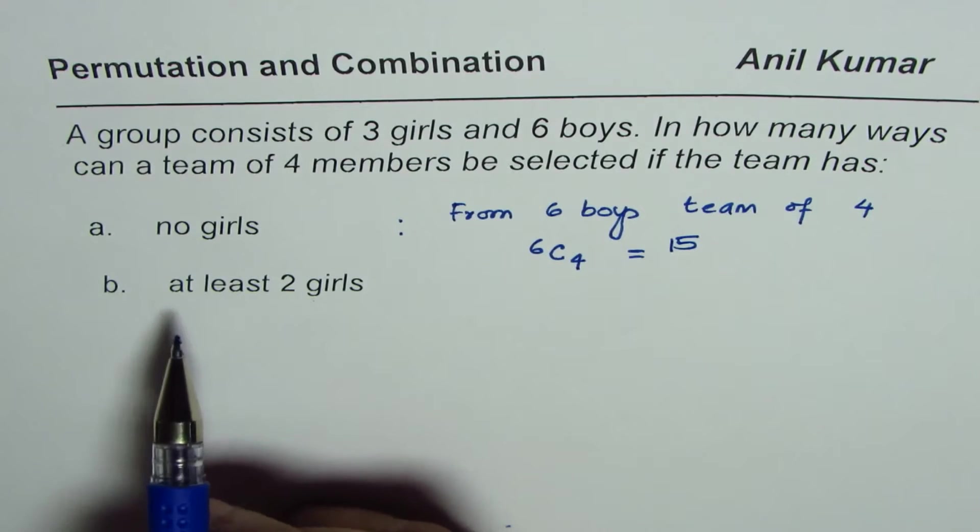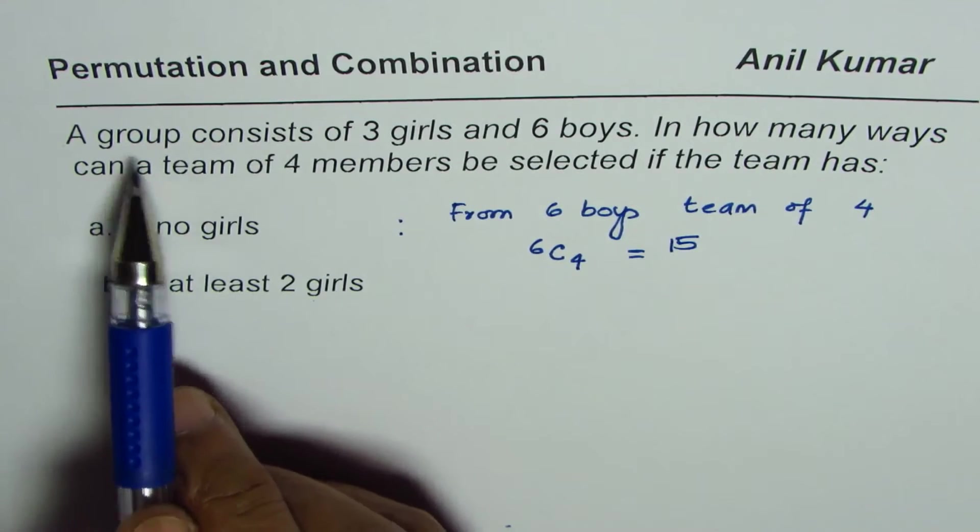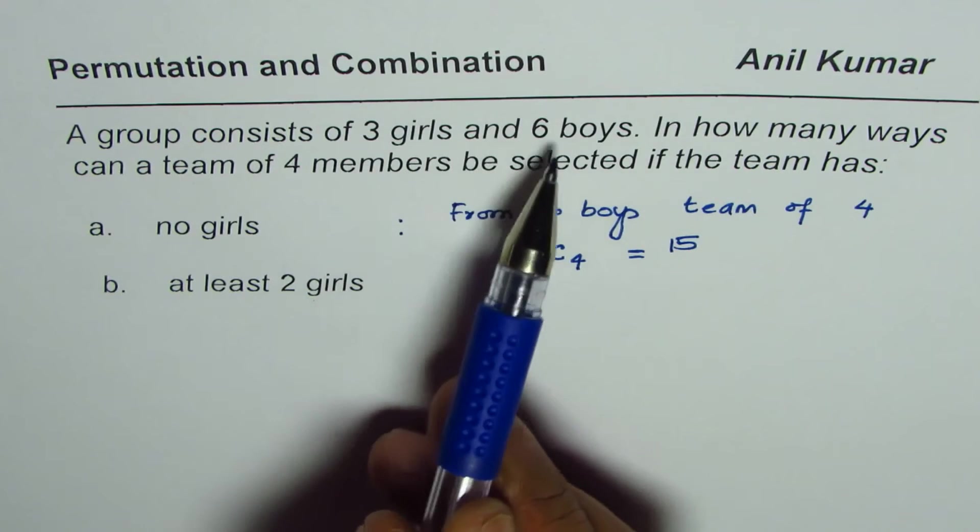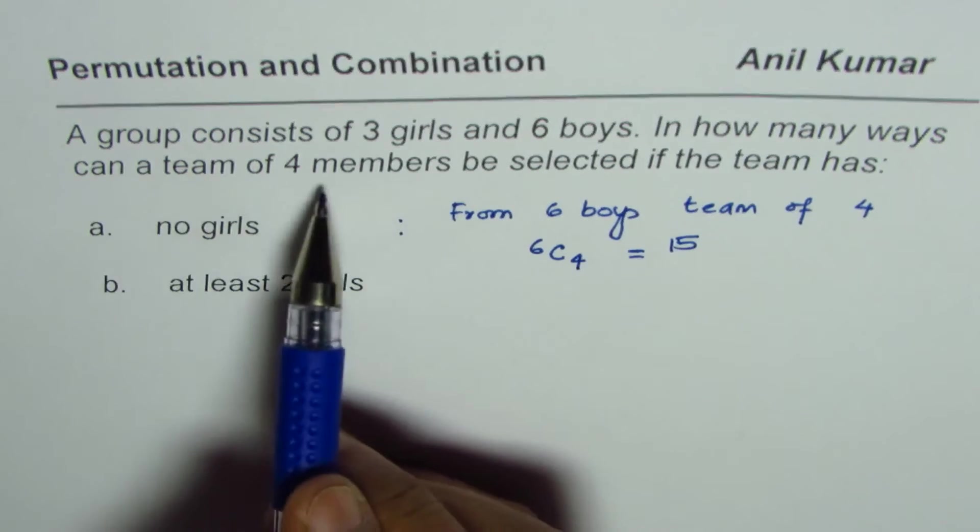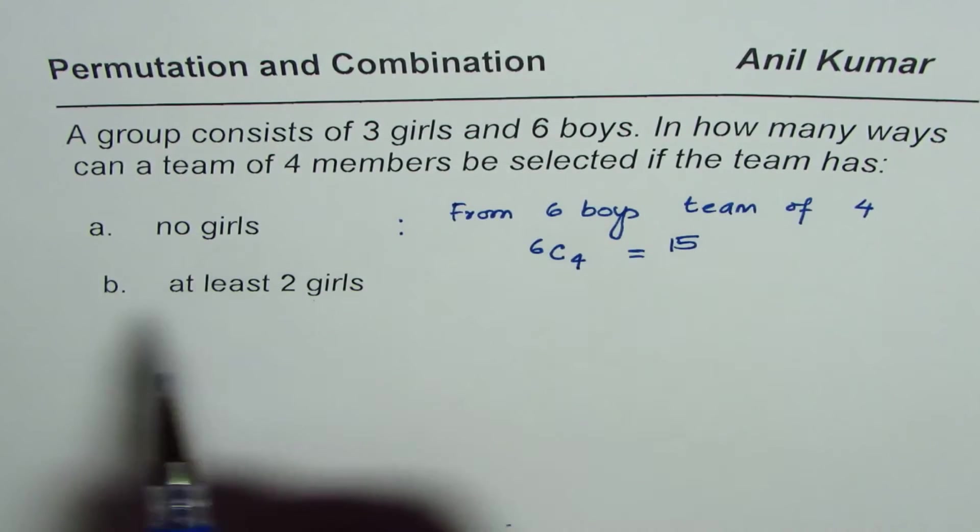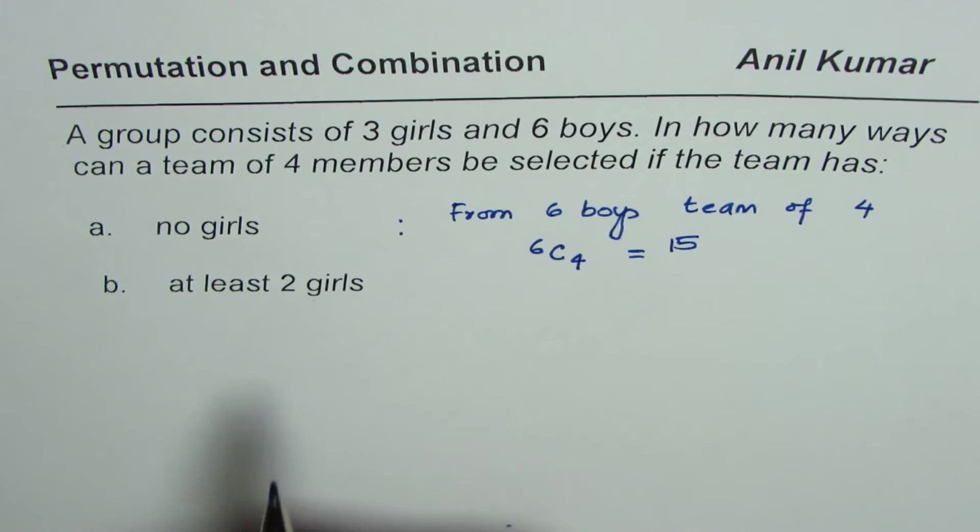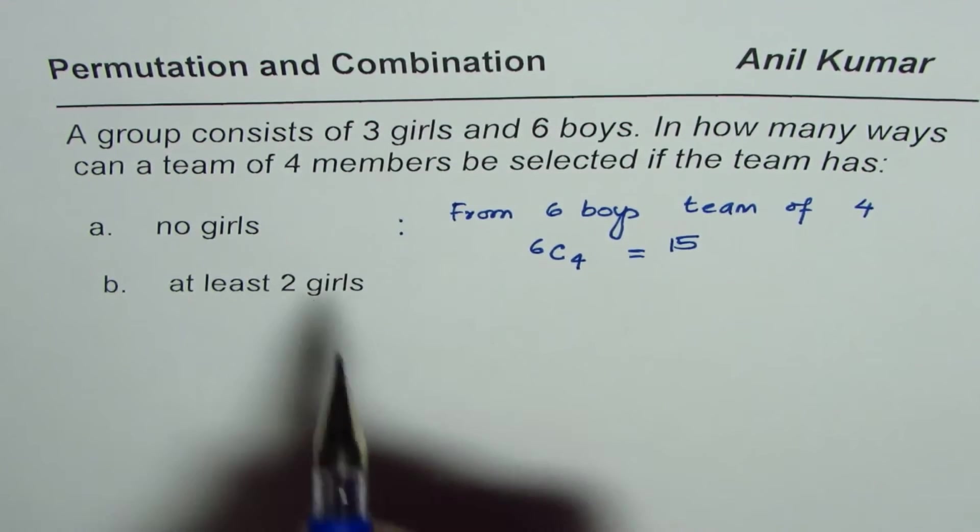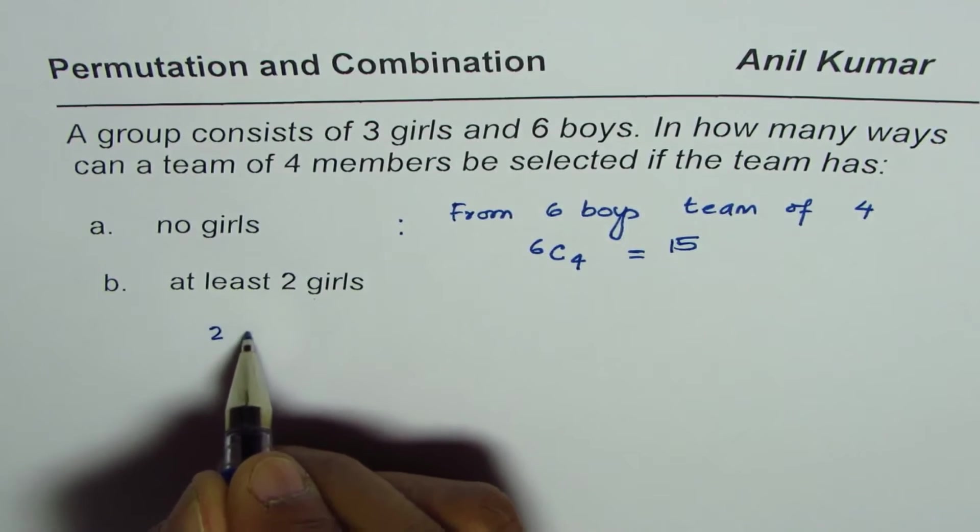Now let's do the next one. It says a group consists of three girls and six boys. In how many ways can a team of four members be selected if the team has at least two girls? Now there are three girls in all, so that means either we have two girls.